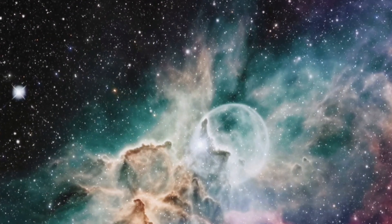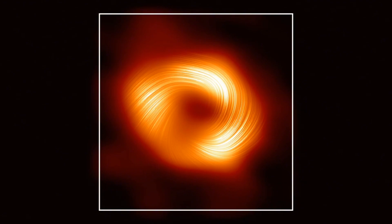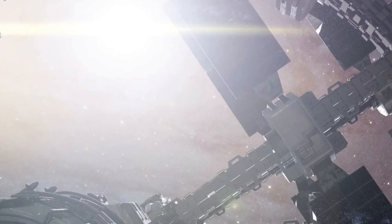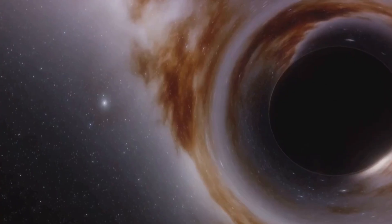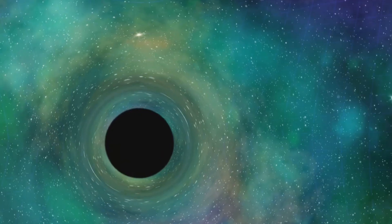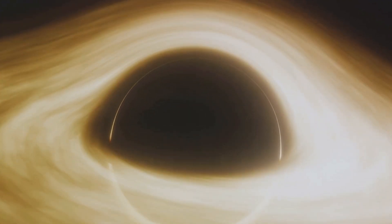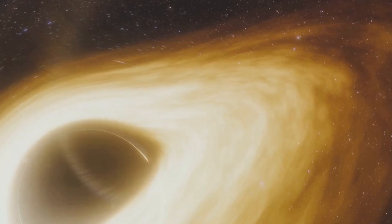But all that has changed with the release of a new image that has given us an unprecedented look at this celestial behemoth. This new image doesn't show Sagittarius A itself, of course. Black holes, by their very nature, are invisible. What it does show is the matter around the black hole, heated to millions of degrees as it spirals into the black hole's event horizon, the point of no return.